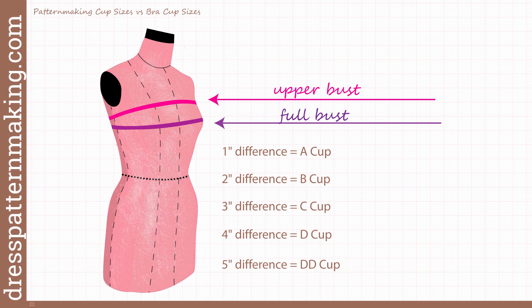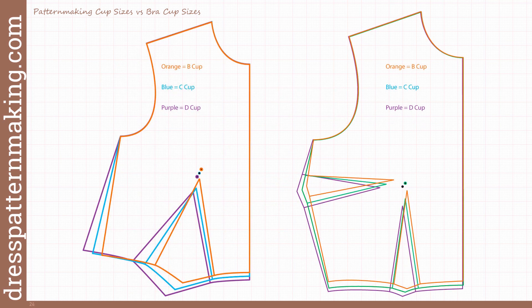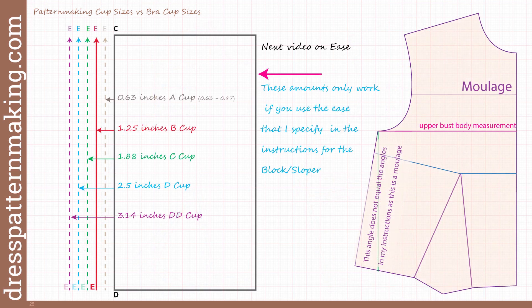To summarize: pattern making bust cups are determined by the difference between your upper bust and your bust — one inch is an A cup, two inches a B cup, three inches a C cup, four inches a D cup, five inches a double-D cup. Using my system, you can draft a block that includes your bust cup rather than drafting a B cup block and then doing a large bust adjustment. The system ends with a two-dart block with your bust cup, fitting both the upper bust and the bust — remembering to add the ease I have specified.